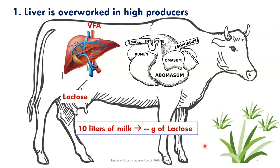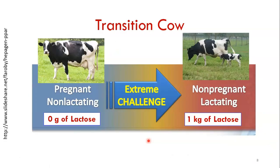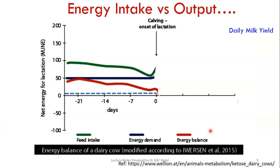Lactose is approximately 5% of milk, which comes to about 50 grams per liter. So a 10-liter cow produces 500 grams of lactose, and a 20-liter cow must produce one kilogram of lactose. This animal, which was producing no milk lactose during the dry period, suddenly needs to produce one kilogram of lactose — and that is a major part of the stress imposed on the liver.